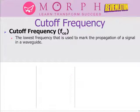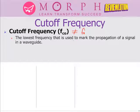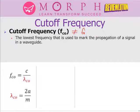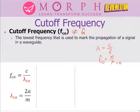The cutoff frequency is never equal to the operating frequency — it is not the frequency of the signal you are using. Cutoff frequency is a limiting frequency: a specification that tells you, from that frequency and above, signals can propagate inside the waveguide. Based on the formula, lambda is equal to C over F, so F is equal to C over lambda. If this is the cutoff, then the cutoff frequency equals C over the cutoff wavelength, where C is the speed of light.